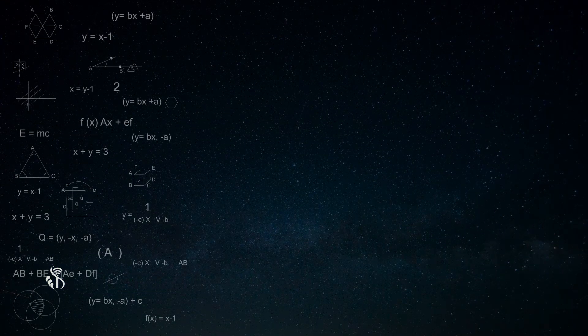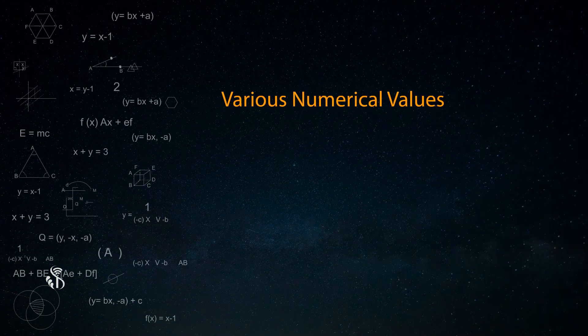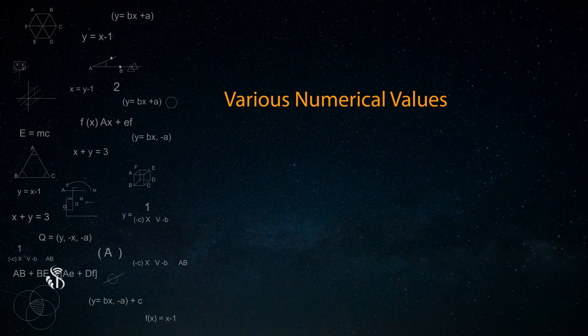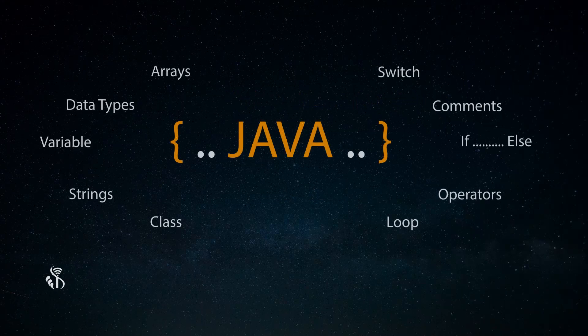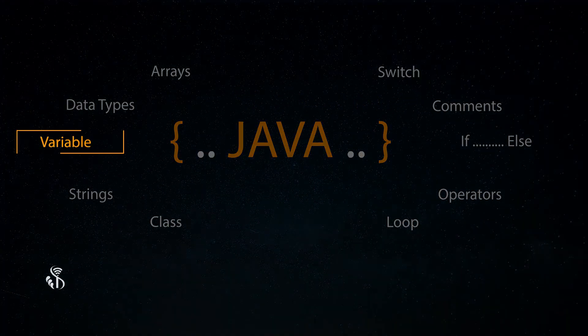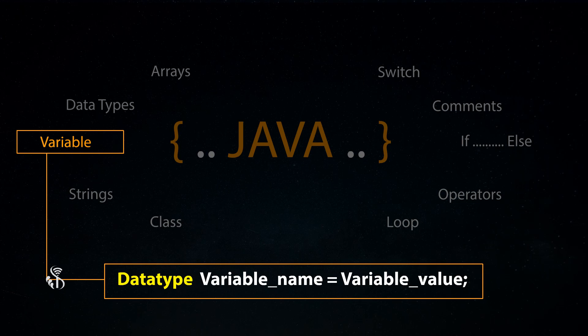In mathematics, we have differentiated the various numerical values into integers, decimals, etc. In the same way, in Java programming, we have to declare what types of variables we are going to use in our program.